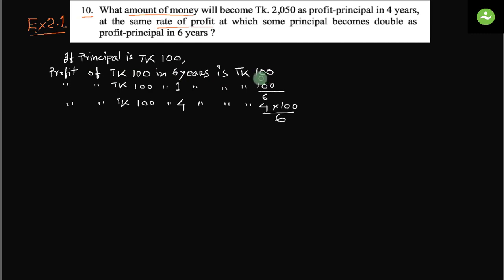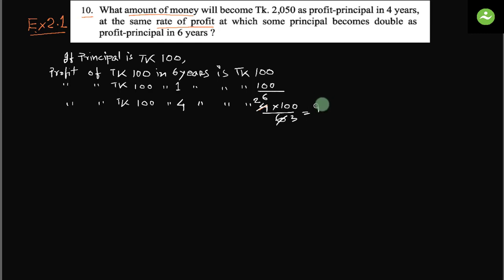Because profit-principal will double. Profit of Taka 100 in one year is 100 divided by 6. Profit of Taka 100 in four years is 4 times that, which is 200 by 6. If we simplify, this becomes 200 by 3, which equals Taka 200/3.